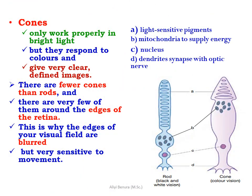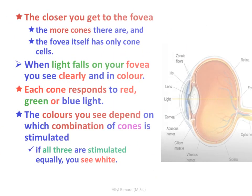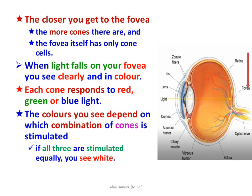Cones only work properly in bright light, but they respond to colors and give a very clear and defined image. There are fewer cones than rods, and there are fewer of them around the edges of the retina — this is why the edges of your visual field are blurred but very sensitive to movement. The closer you get to the fovea, the more cones there are, and the fovea itself has only cone cells. Each cone responds to red, green, or blue light. The colors you see depend on which combination of cones is stimulated; if all three are stimulated equally, you see white.